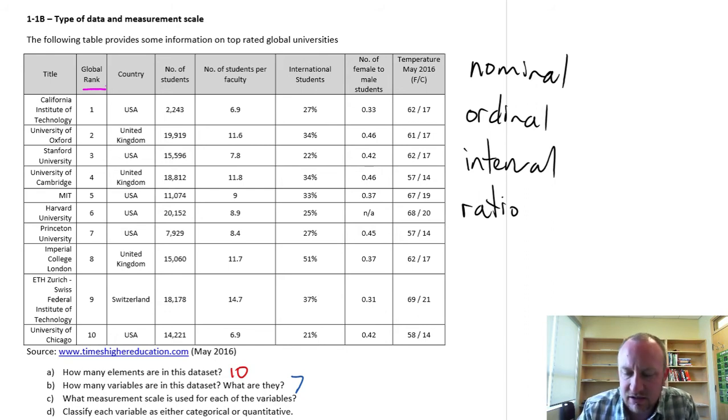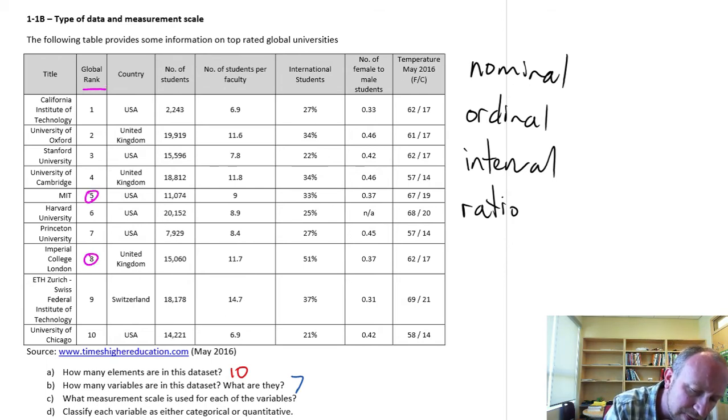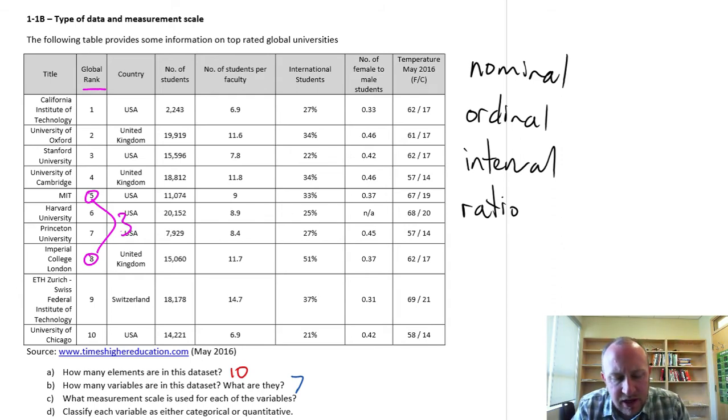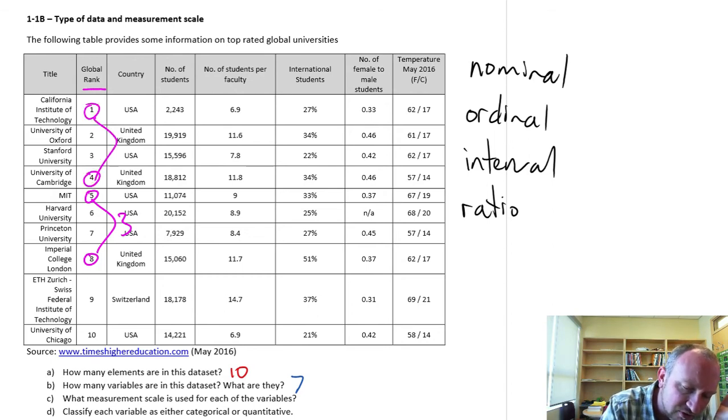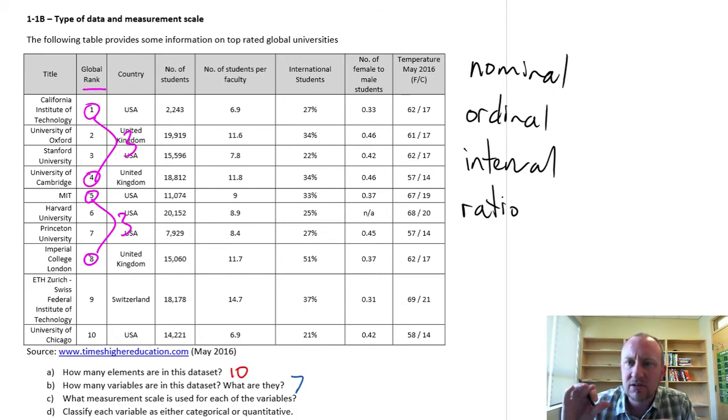Is it interval? Well, I can look at a difference, but a difference doesn't really have any meaning here. If I look at 8 minus 5, so that difference is 3. There's no units tied to that. All I can say is that MIT is better than Imperial College. If I look at 4 and 1, well, that difference is also 3. But the magnitude of the difference in quality between these universities doesn't necessarily need to be the same.